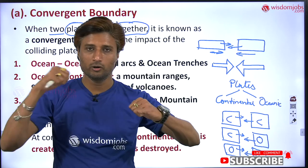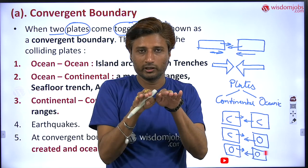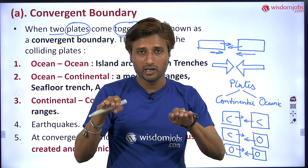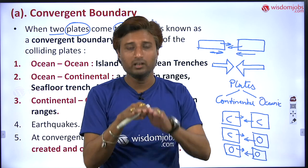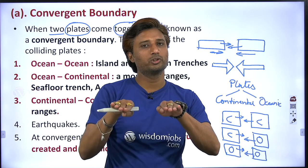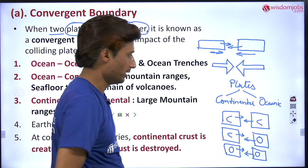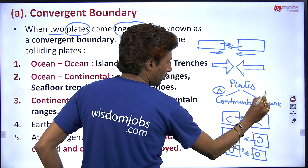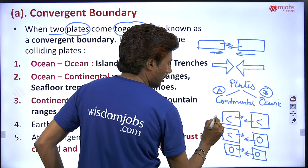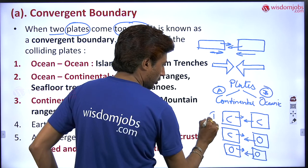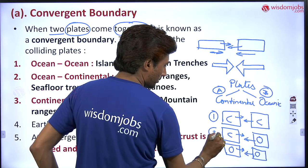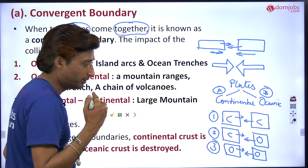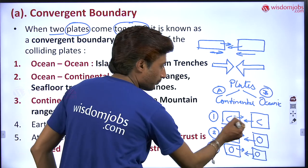Continental plate and continental plate coming together towards each other; continental and oceanic plate coming towards each other; and oceanic plate and oceanic plate coming towards each other. Plates are of two types — continental and oceanic — but the combination is of three types. What will be the result of this collision?